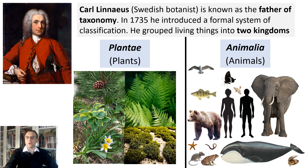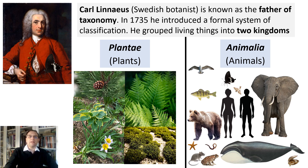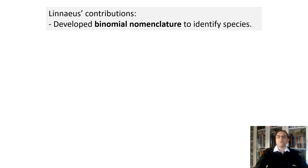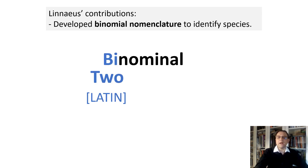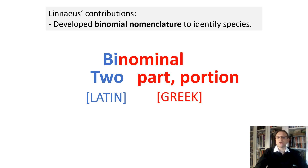Linnaeus was the first naturalist to include humans within the animal kingdom. In 1735, the class into which Linnaeus inserted humans was called quadrupeds and the order Anthropomorpha. Later in his career, he changed these names to mammals and primates. Besides this, Linnaeus developed binomial nomenclature to identify species. Bi in Latin stands for two, and nomial has Greek origin meaning part or portion — so species are named using two words.